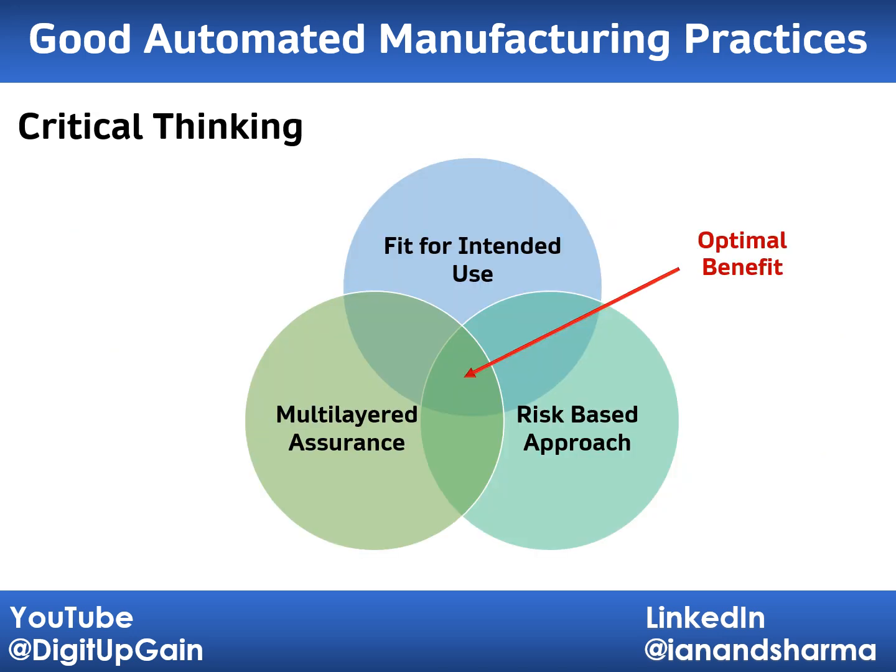The 2nd edition emphasizes critical thinking in the validation process, moving away from rigid box-ticking approaches. It encourages professionals to use a risk-based mindset and customize their approach based on the system's complexity and needs. Instead of following strict rules, teams should focus on adding value by evaluating systems thoughtfully, ensuring they are fit for purpose. This aligns with the FDA 2022 CSA guideline, promoting flexibility and innovation while ensuring patient safety and product quality.